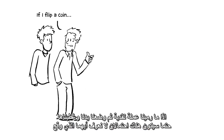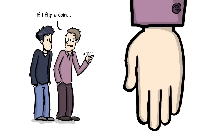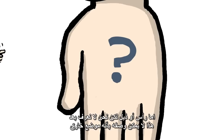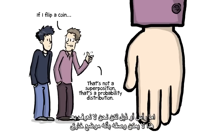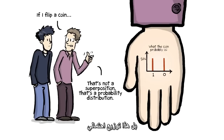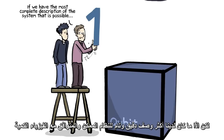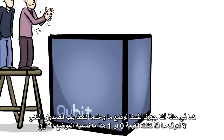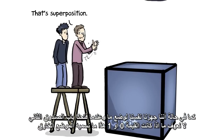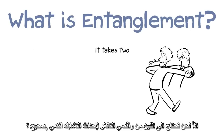If I flip a coin and then cover it up as soon as it lands, you don't know whether it's heads or tails, but it's either heads or tails — we just don't know yet. That's not a superposition, that's a probability distribution. But if we have the most complete description of the system that is possible, compatible with quantum physics, and when we opened door number two we don't know whether it was a zero or a one — that's superposition, because that's really intrinsic randomness instead of probability associated with ignorance.